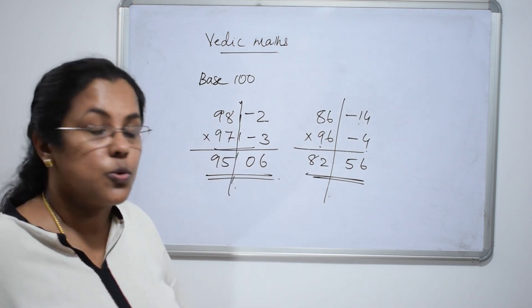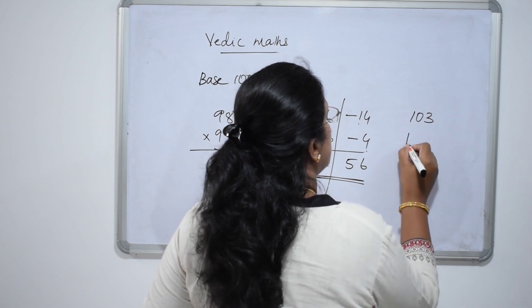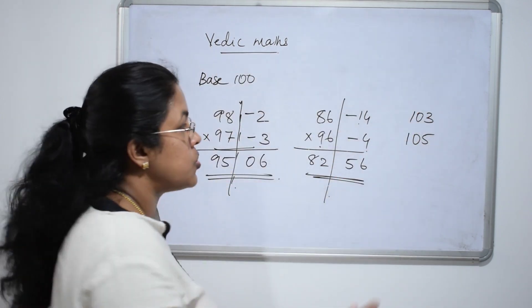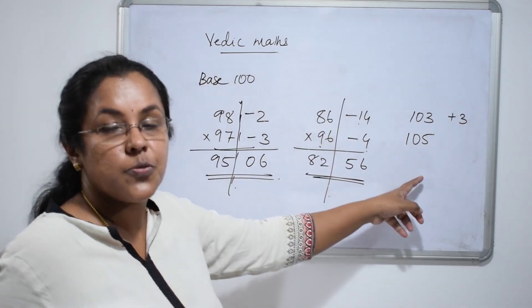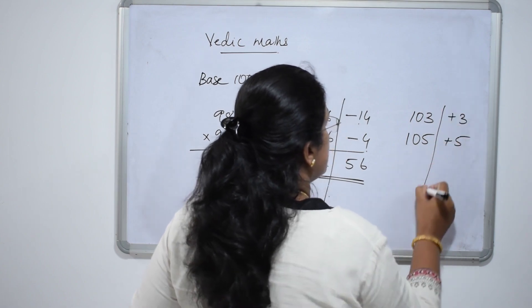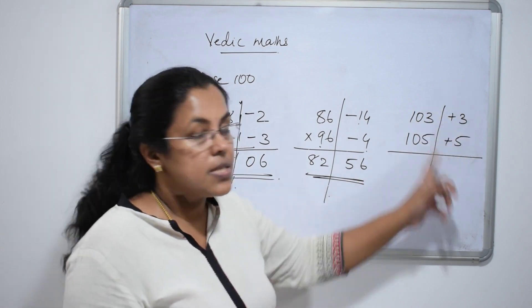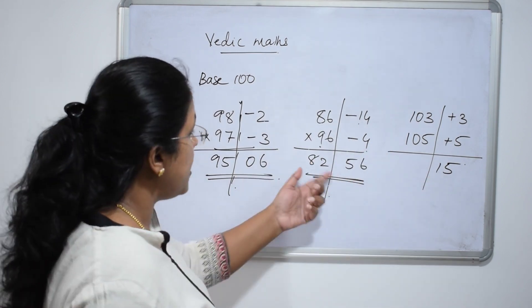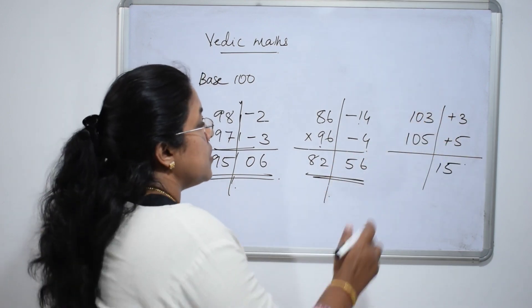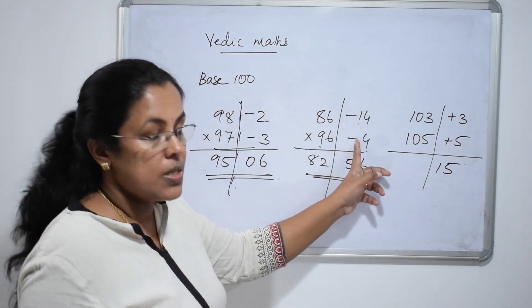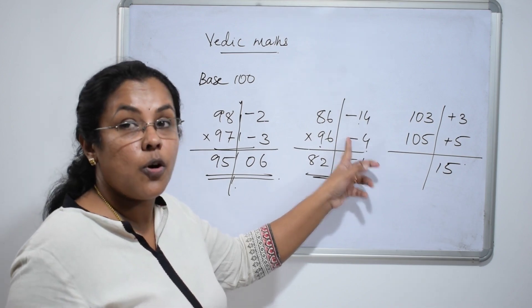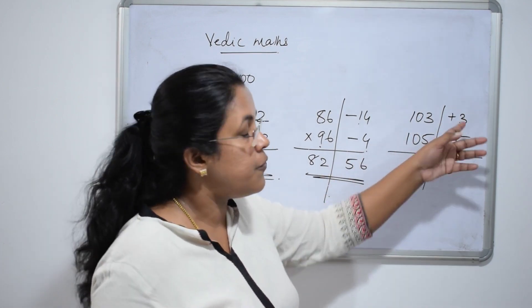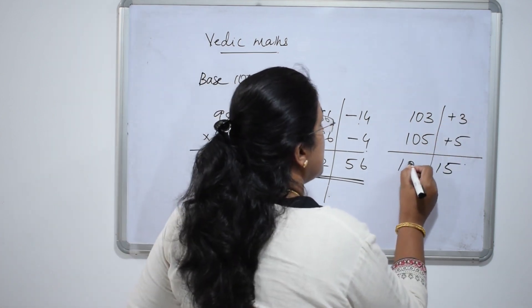This also works when both numbers are greater than 100. Let the numbers be 103 and 105. 103 is 3 greater than 100, so write plus 3; and 105 is 5 greater than 100, so write plus 5. Divide into 2 parts. 5 threes are 15 — write 15 since that is already 2 digits. For the left part: 105 plus 3 — or 103 plus 5 — gives 108. There is a carry of 1, so add 1 to get the final answer 10815.